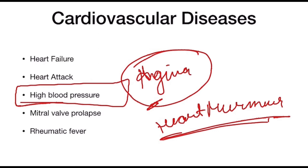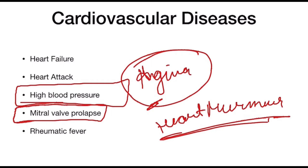Heart murmur may result from physiological factors or pathological abnormalities. Its presence may be significant in dental patients as it may indicate underlying heart disease. The primary goal is to determine the nature of the murmur. The American Heart Association recommended antibiotic prophylaxis for many patients with cardiovascular diseases to prevent infective endocarditis, though current guidelines have revised these recommendations based on accumulated scientific evidence. Regarding mitral valve prolapse, the leaflets of the mitral valve balloon back, and tight closure may not occur, resulting in regurgitation. Not all patients with mitral valve prolapse have regurgitation, but most do.